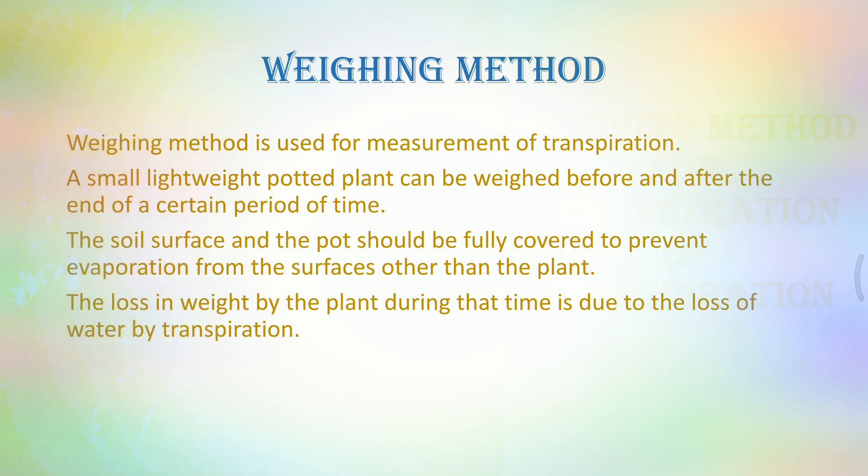Weighing method is used for the measurement of transpiration. A small lightweight potted plant is taken for the experiment and is weighed before proceeding. The initial reading is taken and after the experiment is completed the same plant is weighed. The difference from the initial time period to the final time period is the amount of transpiration which occurs.